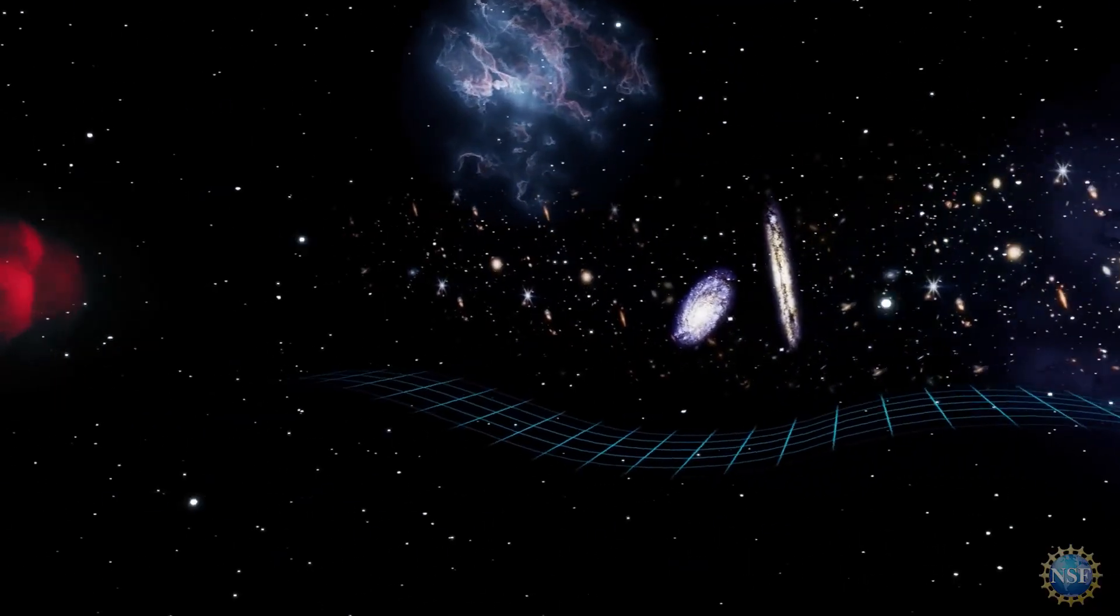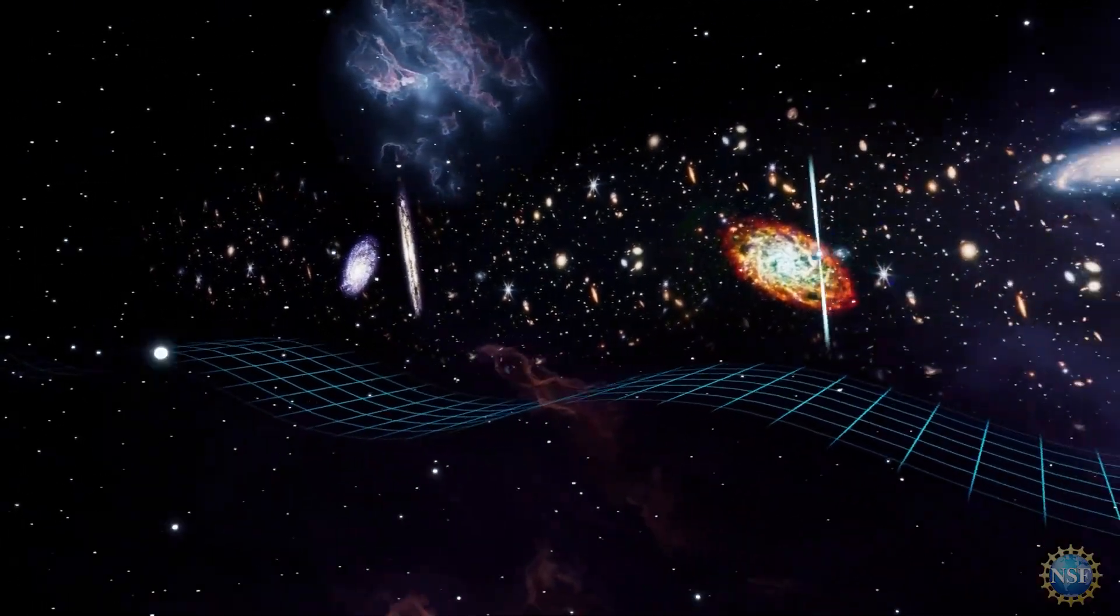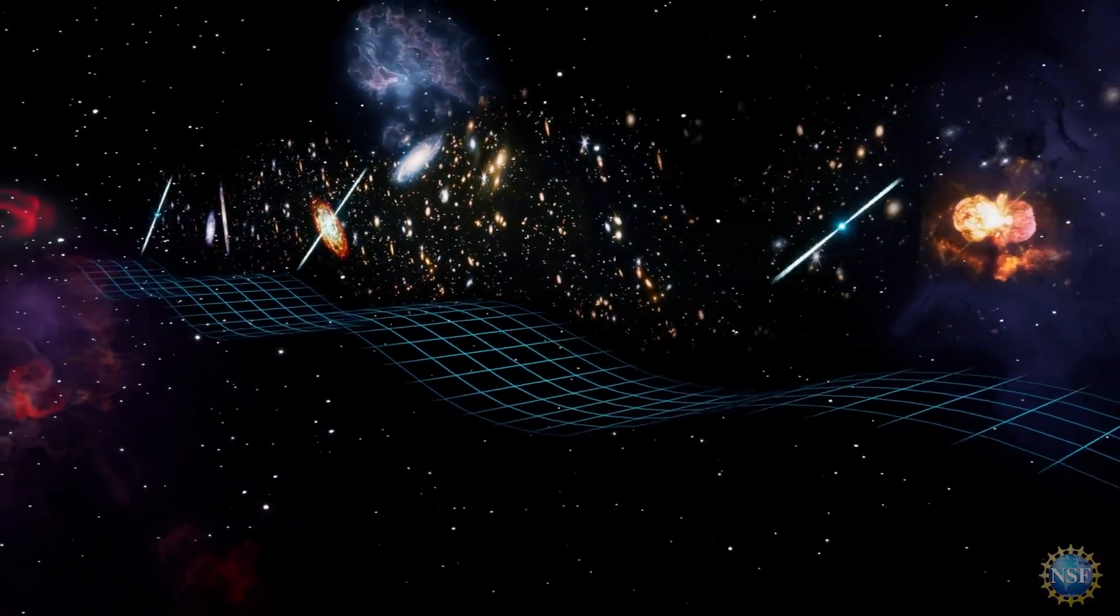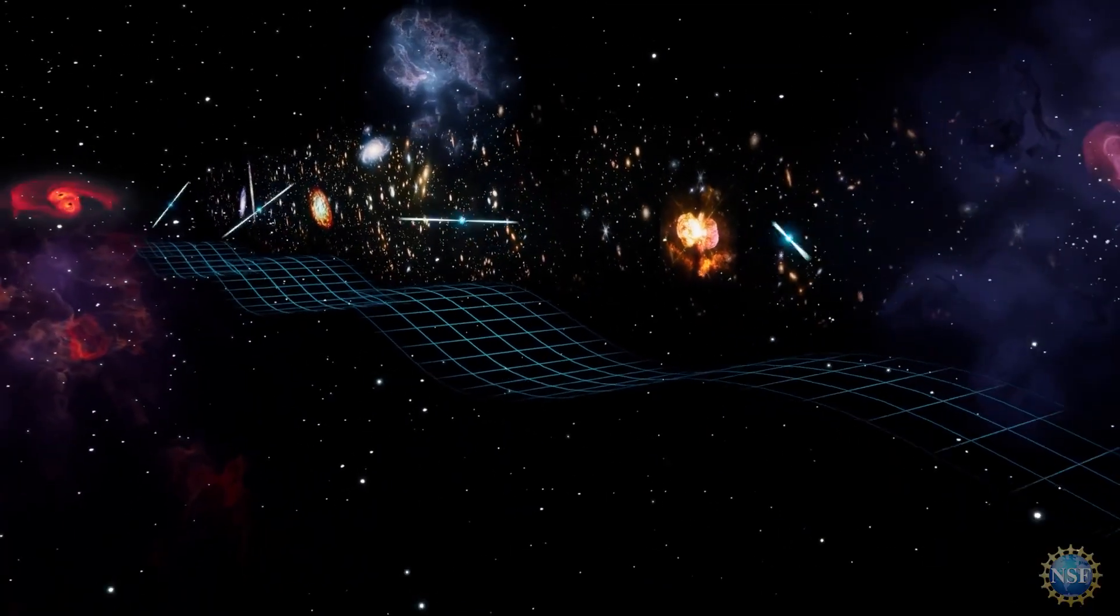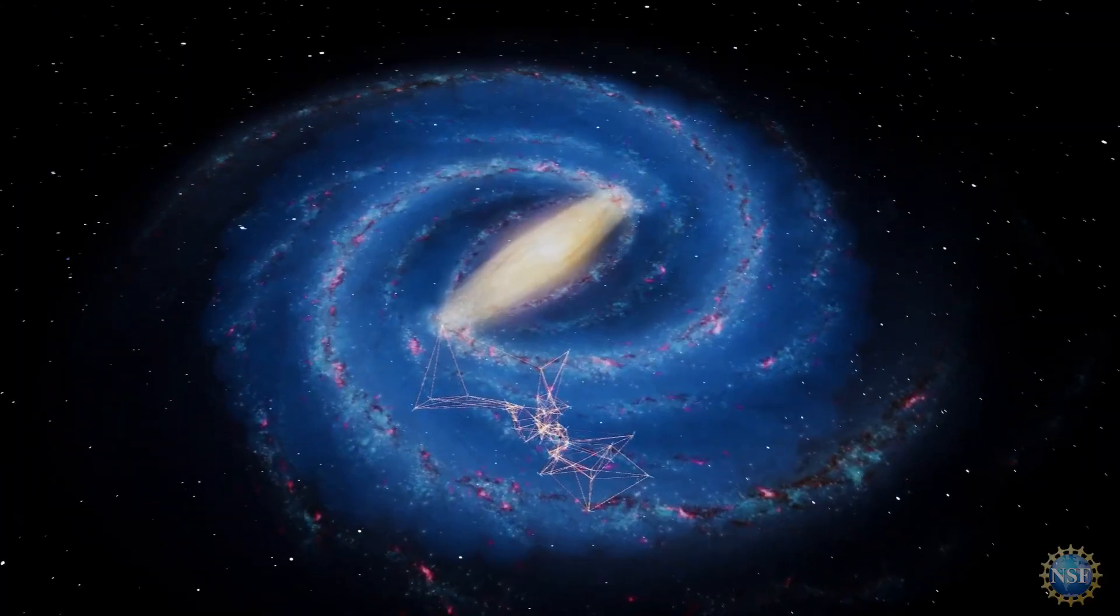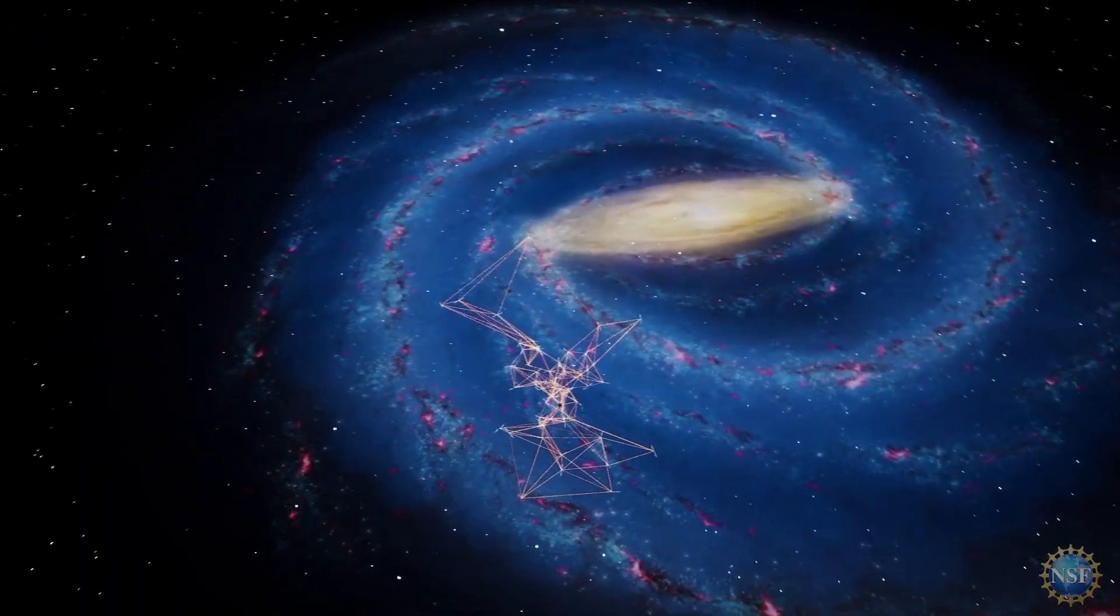By monitoring the radio pulses from these ultra-precise cosmic clocks, Nanograv can detect the slightest deviations in the regularity of their timekeeping, and these deviations trace ripples in spacetime. This galactic-scale detector is called a pulsar timing array.